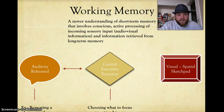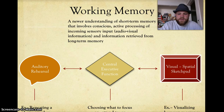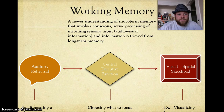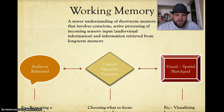On the other side, the central executive function also processes what we call visual-spatial information — basically anything that enters our consciousness through our eyes. The visual-spatial sketchpad is in our heads when we can visualize something physical. For example, when you're thinking about how to rearrange your room, you can visualize the room and manipulate the objects in your mind. The working memory described here is the intermediary between sensory information and long-term memory, processing input from both our eyes and our ears.